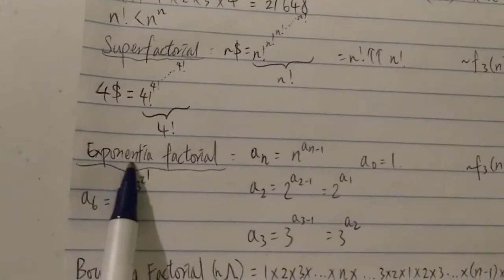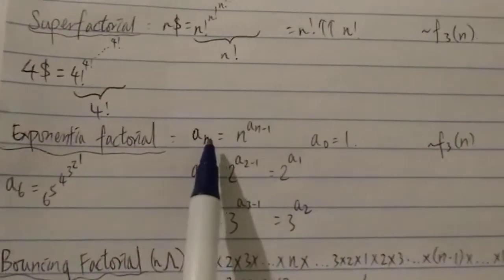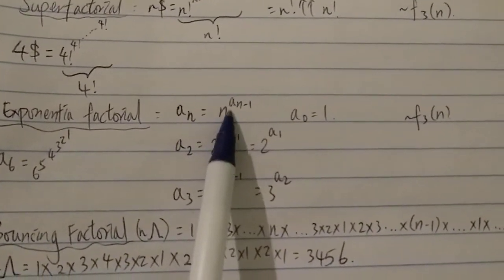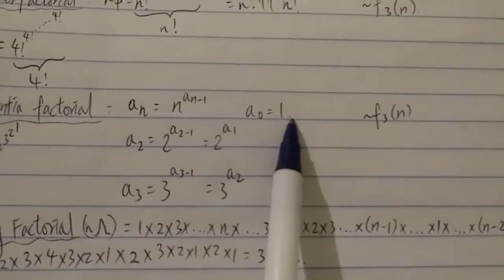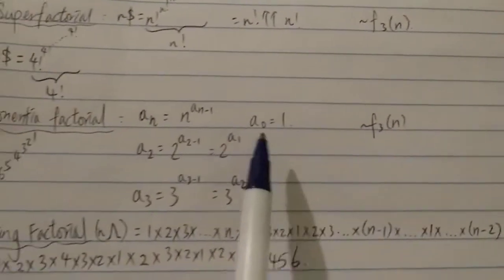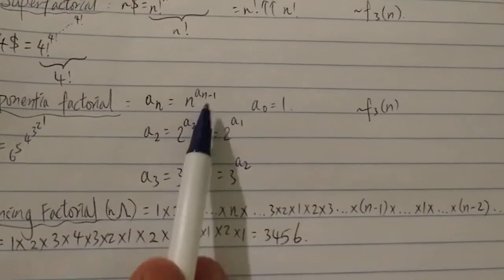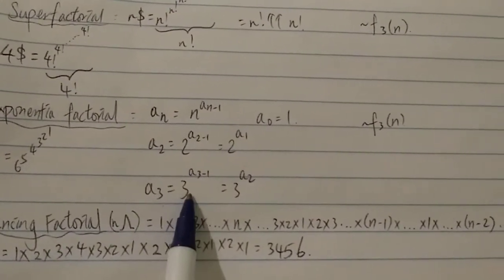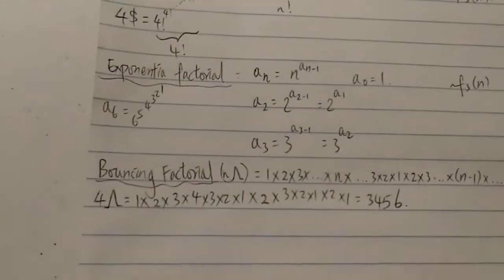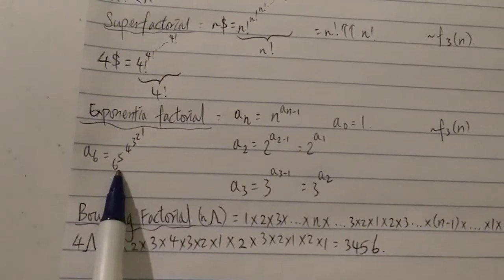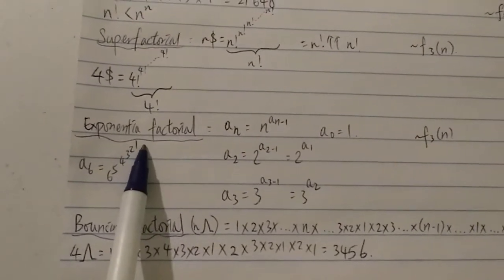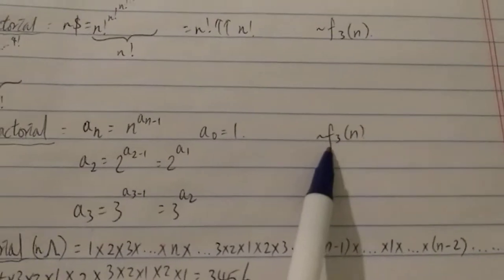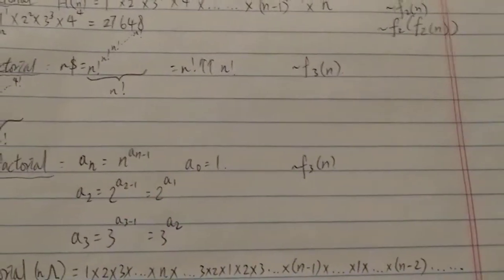The next function is the exponential factorial, a(n), defined recursively as a(n) = n^(a(n−1)), with a(1) = 1. Its growth rate is around f₃(n). So a(2) = 2^(a(1)) = 2^1 = 2, and a(3) = 3^(a(2)) = 3². For example, a(6) = 6^(5^(4^(3^(2^1)))), evaluated from top to bottom. It's quite fast-growing — slightly slower than the second super factorial, but similarly around f₃(n).